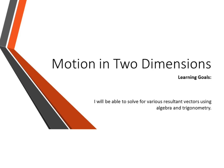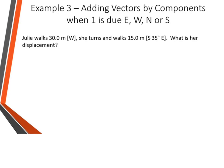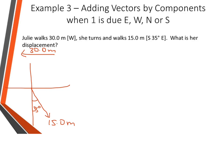In this video we're going to do two examples. The first one involves one vector in a due direction and another that we'll have to break into its components. Julie walks 30 meters west, then turns and walks 15 meters south 35 degrees east. What is her total displacement? Her first vector is 30 meters west. For the second vector, south 35 degrees east, we always need the angle formed with the x-axis, so we do 90 minus 35 to get 55 degrees.